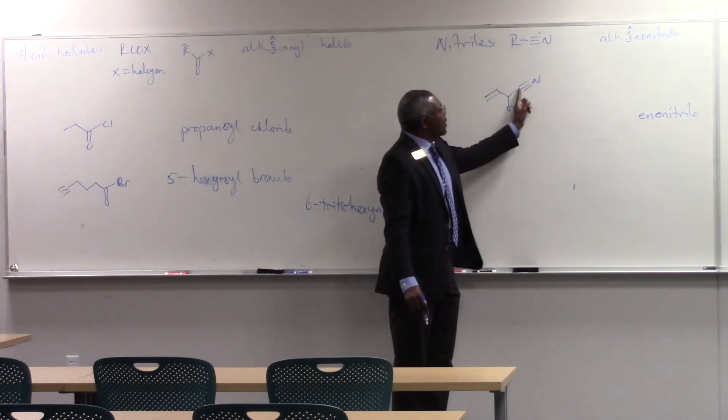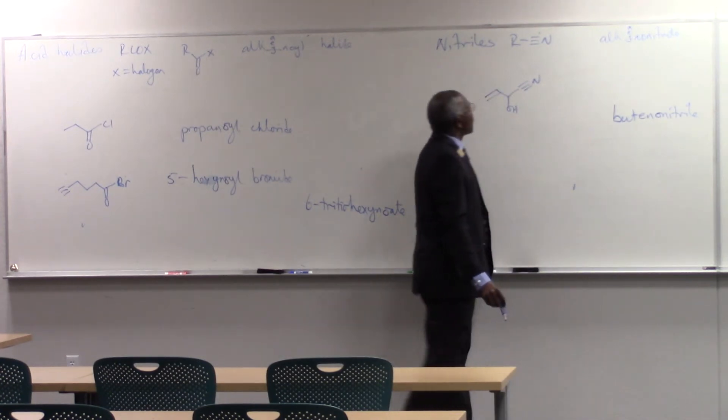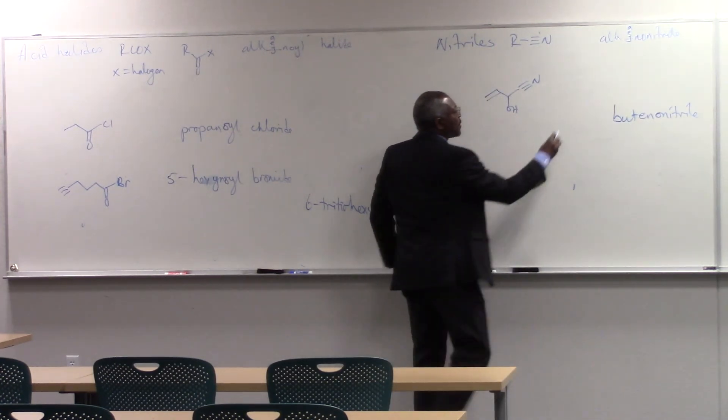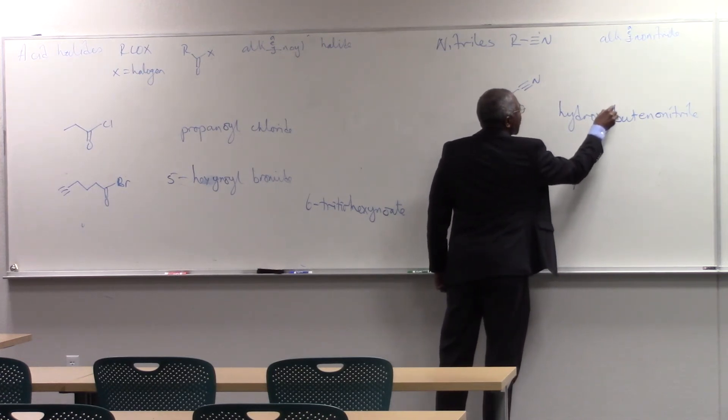It is one, two, three, four carbons long, so it's a butenonitrile, but it's got a hydroxy group as well, so it's a hydroxybutenonitrile.